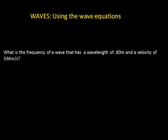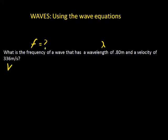Let's tackle another wave problem. This question says: what is the frequency of a wave that has a wavelength of 0.80 meters and a velocity of 336 meters per second? We're given the wavelength lambda and the velocity v, and we're looking for f, the frequency. The equation that includes all three — frequency, wavelength, and velocity — is: velocity equals frequency times wavelength.